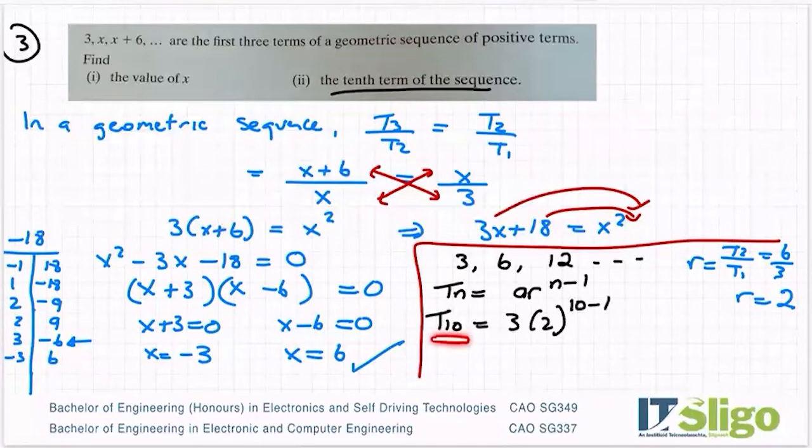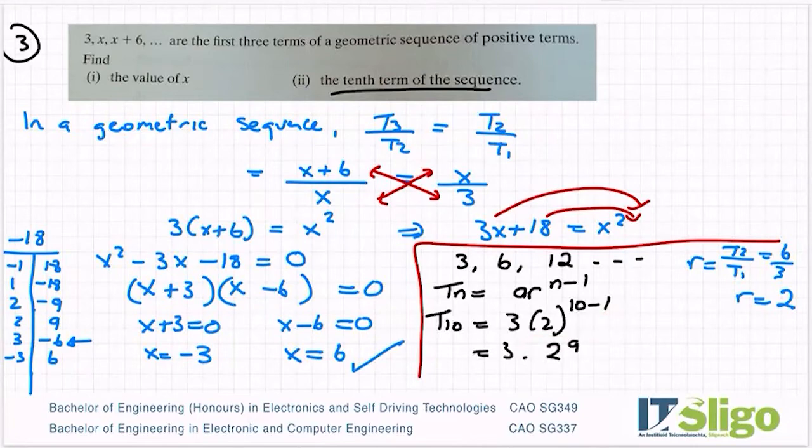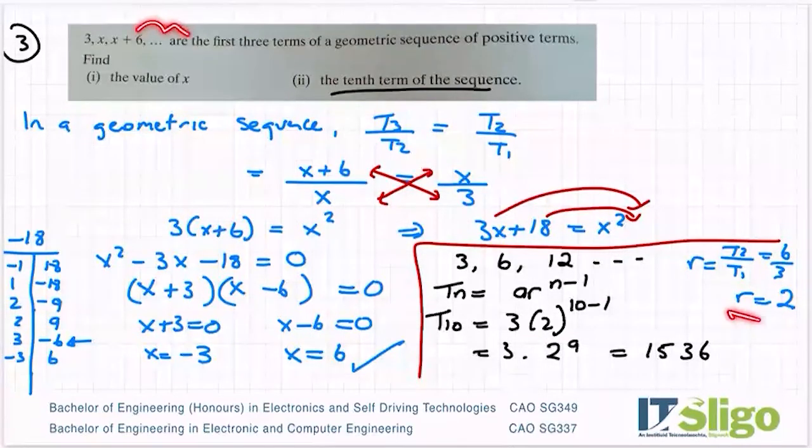So if I'm working out the 10th term, it's T10, so n takes on the value 10. Let's put it into the calculator. You have to do the rules of BOMDAS, you have to do the power first. So it's 3 multiplied by 2 to the power of 9. And I have 1536 being the 10th term. And that's doubling the values all the time because our r is 2.